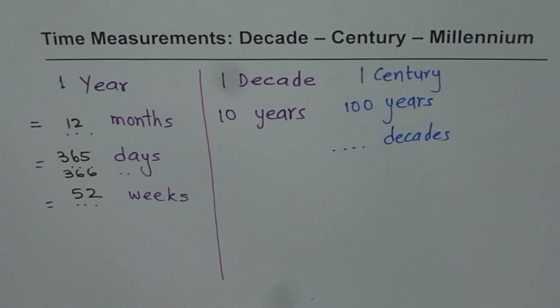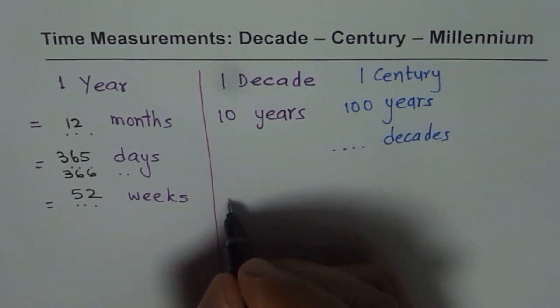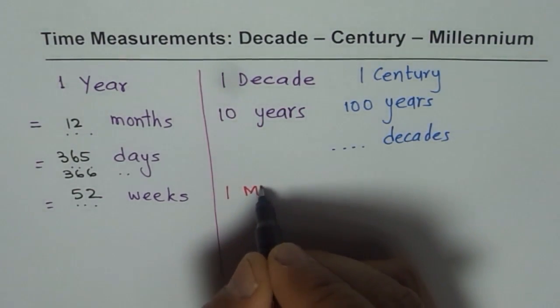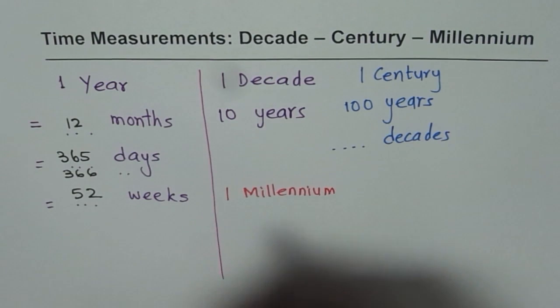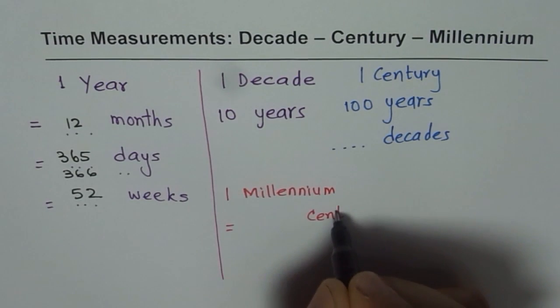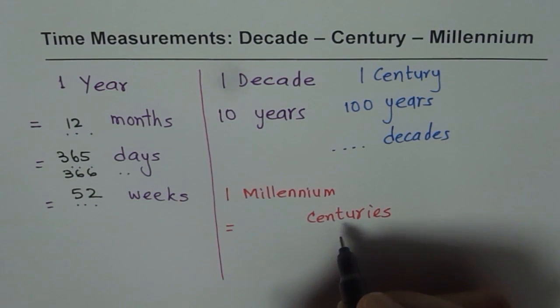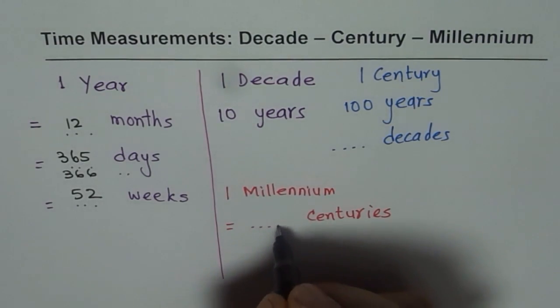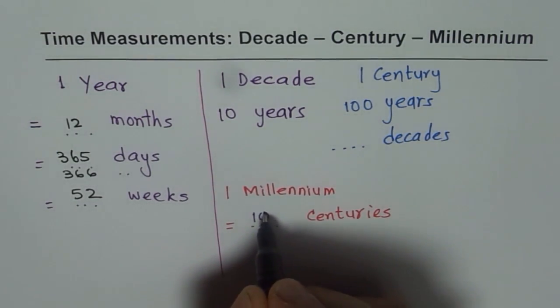Now let's get to the millennium. One millennium is how many centuries? So let me write down here. One millennium. It is equal to how many centuries? Do you know it? One millennium is 10 centuries. So one millennium is 10 centuries.